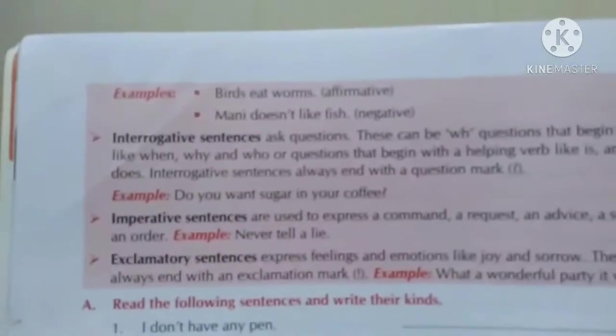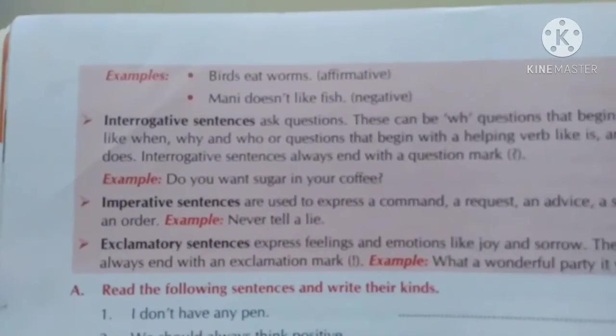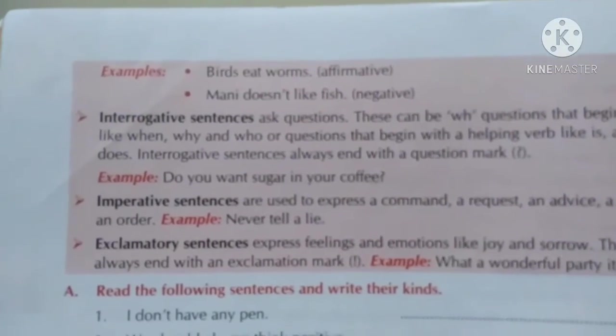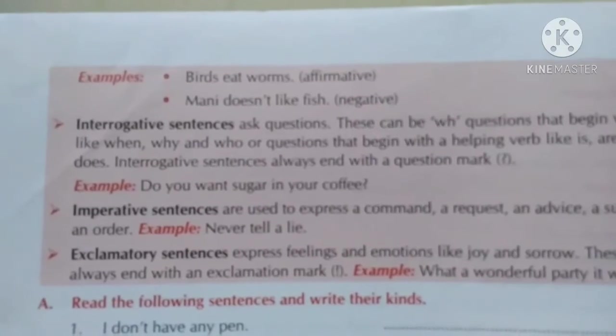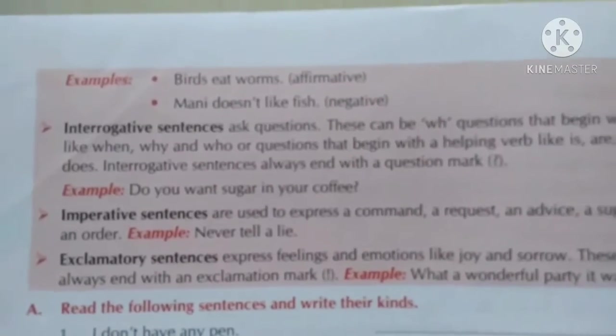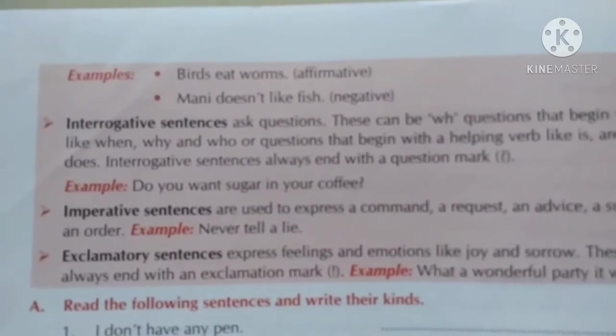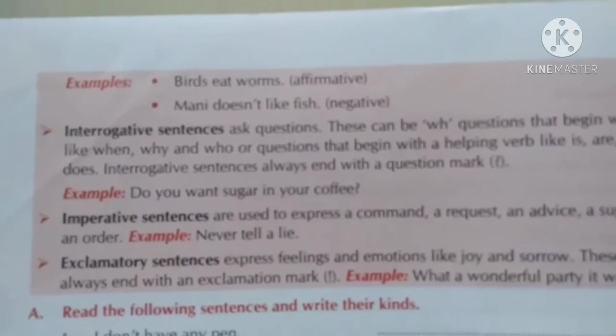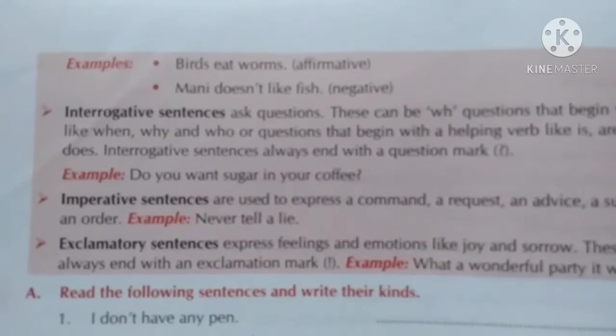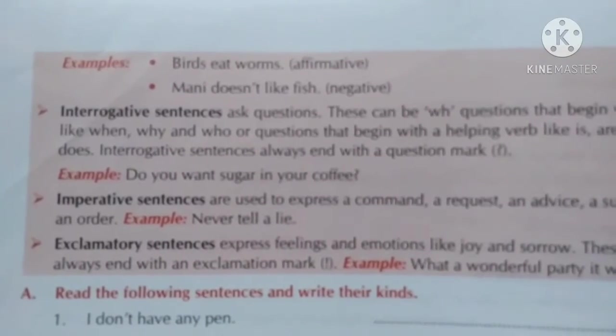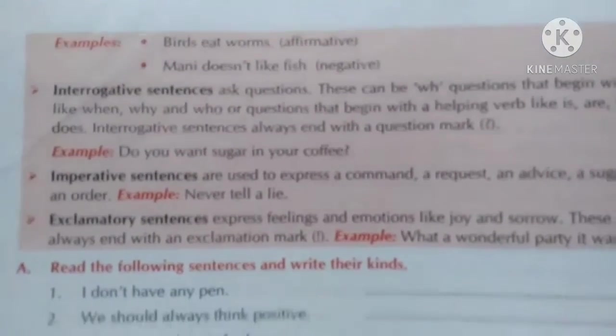Then we will turn the page. After turning the page, the examples are given. 'Birds eat worms.' 'Money doesn't like fish.' Doesn't aagya, matlab not aagya, toh woh negative sentence ho gaya. 'Birds eat worms' — woh affirmative sentence ho gaya.